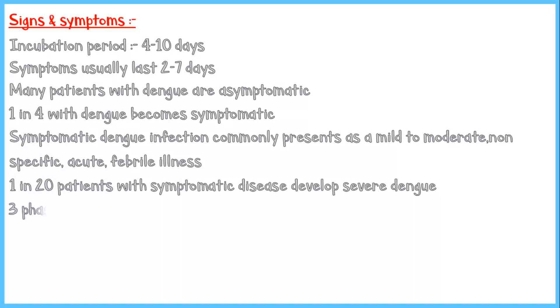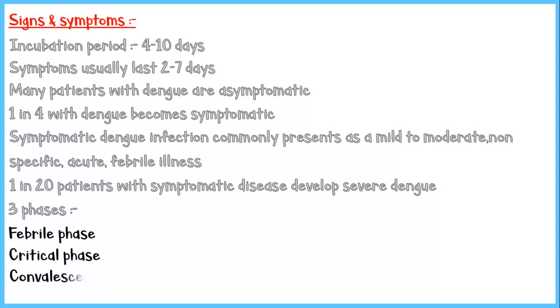There are three phases of the clinical course of a dengue viral infection: the febrile phase, the critical phase, and the convalescent or recovery phase. Let's discuss about them in detail in the following sections.